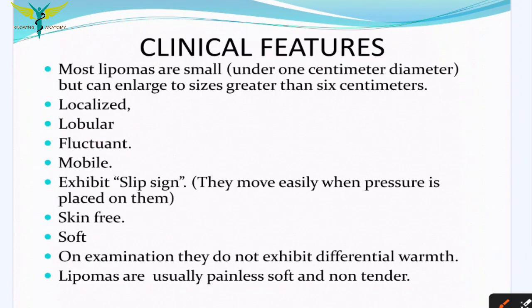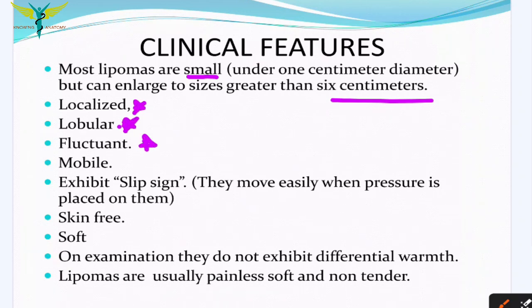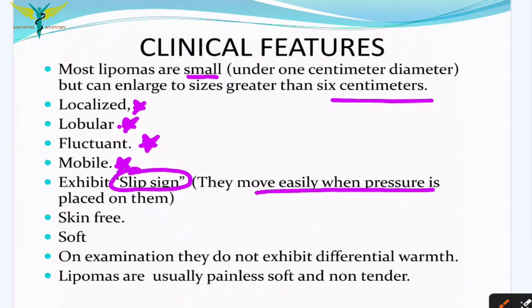Most lipomas are small — under one centimeter in diameter — but can enlarge to sizes greater than six centimeters. They are localized, lobular, and fluctuant structures. As lipomas are fat-filled, they are mobile and exhibit the slip sign — meaning they move easily when pressure is applied. This is a main important point, most commonly asked in viva. On examination, they do not exhibit differential warmth and there is no local rise of temperature.